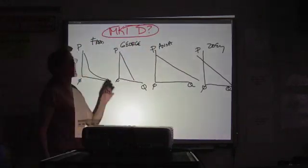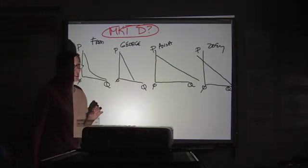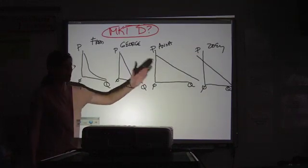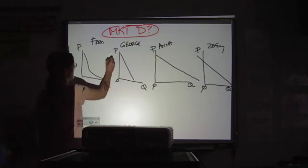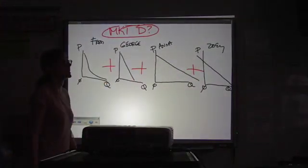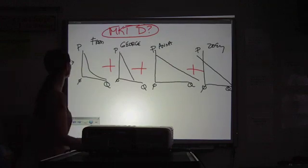Market demand is a horizontal summation of individual demand. That means if you lined up every single consumer in the entire economy who buys that product and add them all together, you would get the market demand curve. Now, you add them at each price.